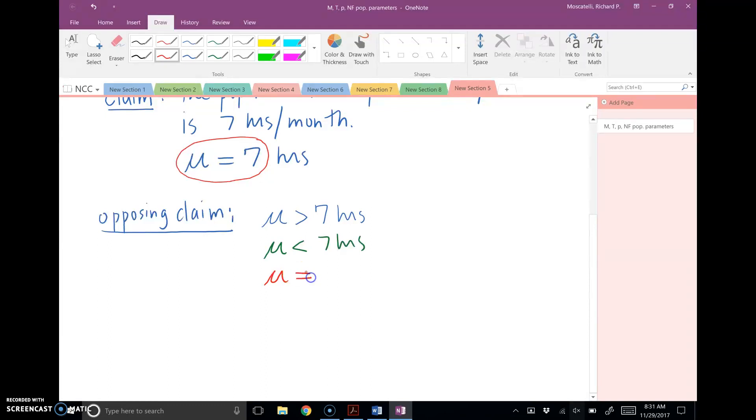what if you just want to say it's different than seven hours? So we'll say not equals to seven hours. So notice for the one way you could state an equality, there are three ways we could state an inequality, three ways to oppose this claim.